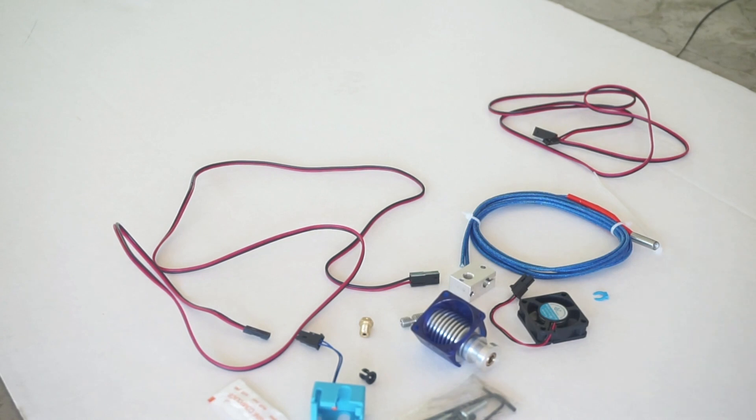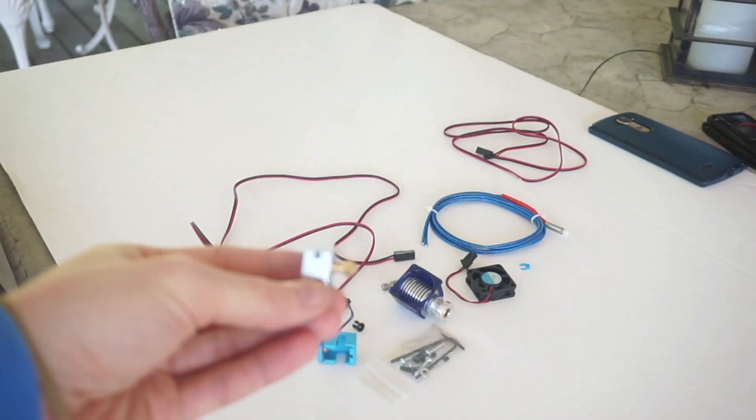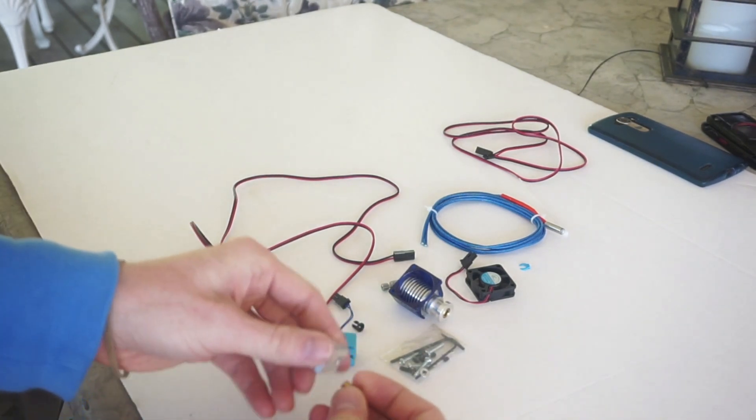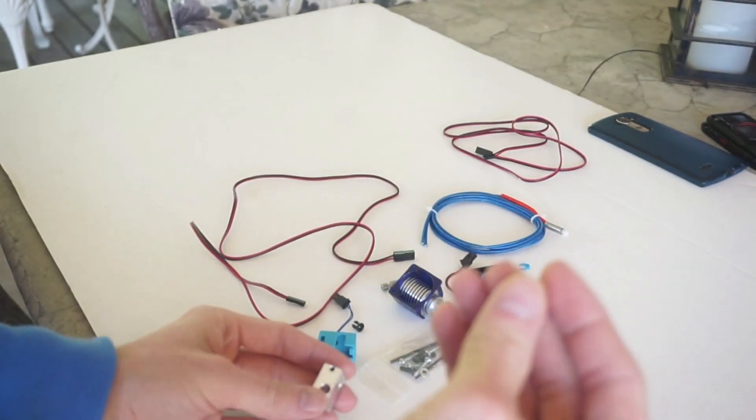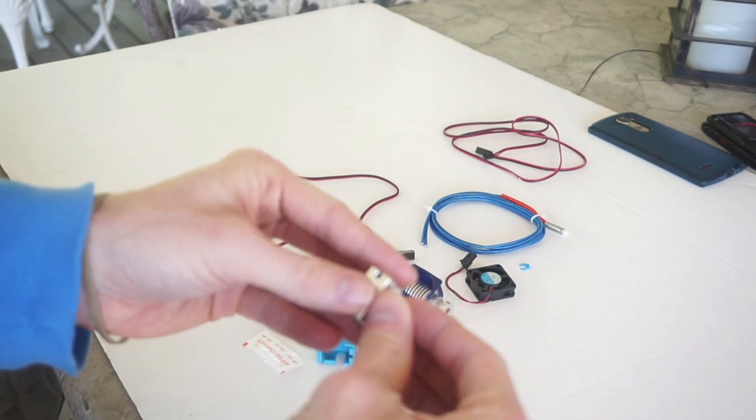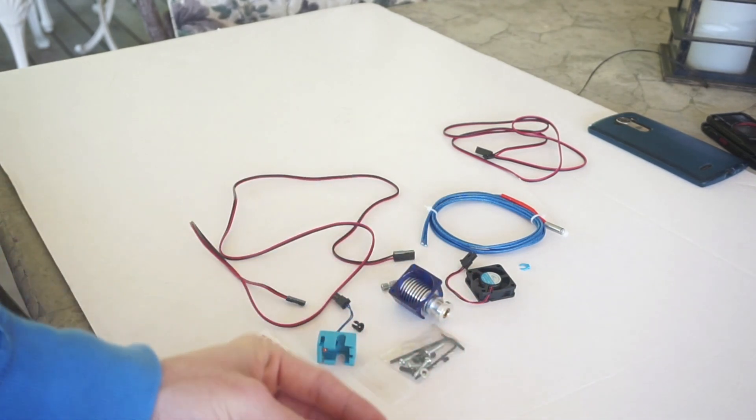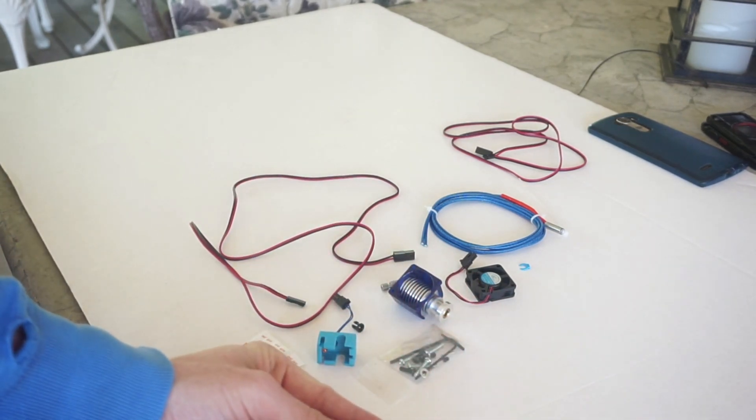So I have all of the parts right there. Now we're going to start the assembly process. I don't know if you can see this but we'll get the hotend and the nozzle and screw it into place. Screw it all the way in and then loosen it a fourth to a half a turn.